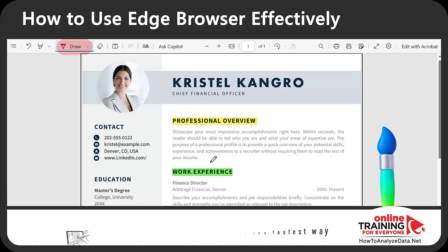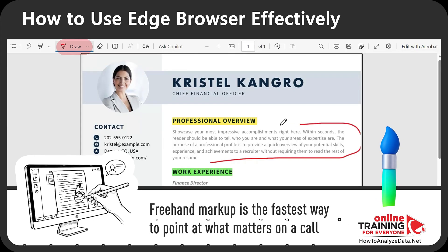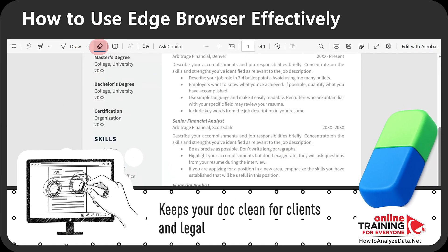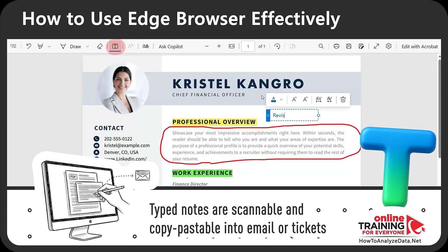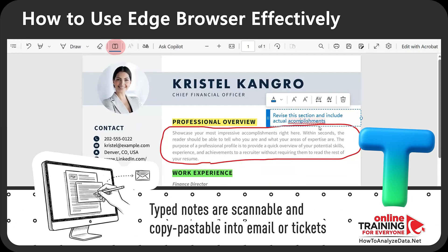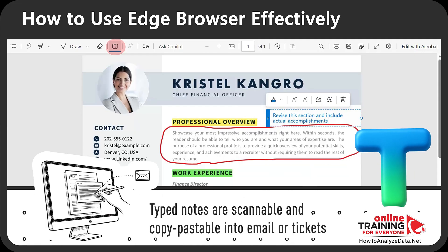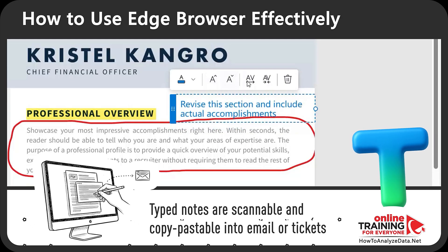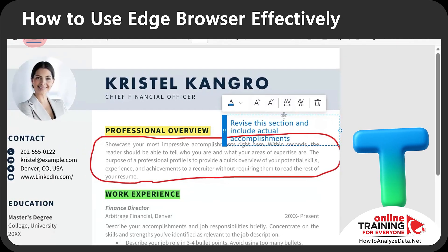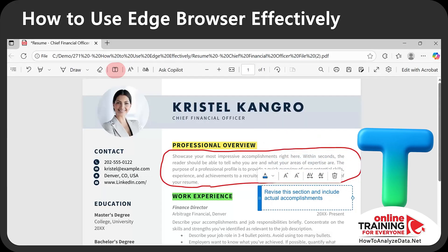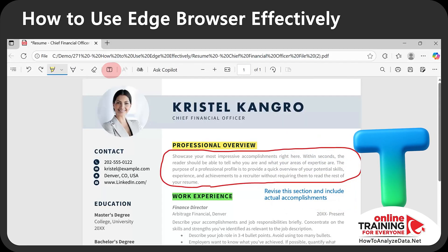Freehand markup is the fastest way to point out what matters in a document. If you annotated something by mistake, you can remove it with the eraser. You can also add text to highlight something for readability — combinations of highlighting, notes, and text give the most emphasis. Use the mini text toolbar to adjust size, alignment, and color to improve readability, and reposition the text so it gets noticed.